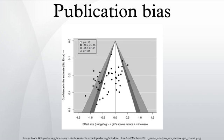Publication bias is a type of bias with regard to what academic research is likely to be published, among what is available to be published. It is of interest because literature reviews of claims about support for a hypothesis or values for a parameter will themselves be biased if the original literature is contaminated by publication bias. While some preferences are desirable — such as a bias against publication of flawed studies — a tendency of researchers and journal editors to prefer some outcomes, e.g. results showing a significant finding, leads to a problematic bias in the published literature.